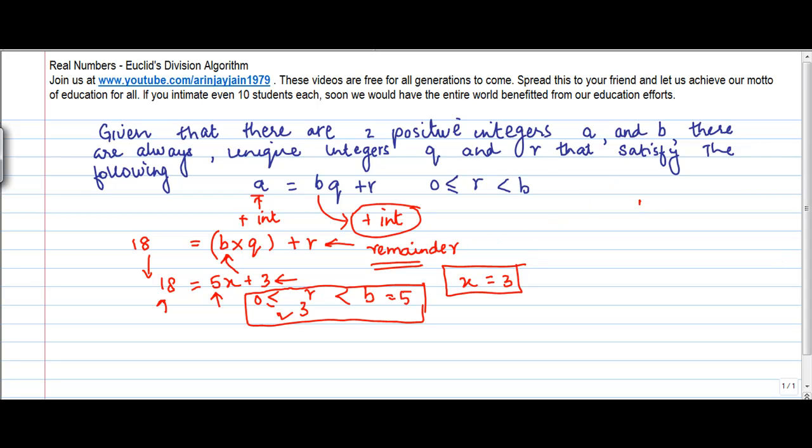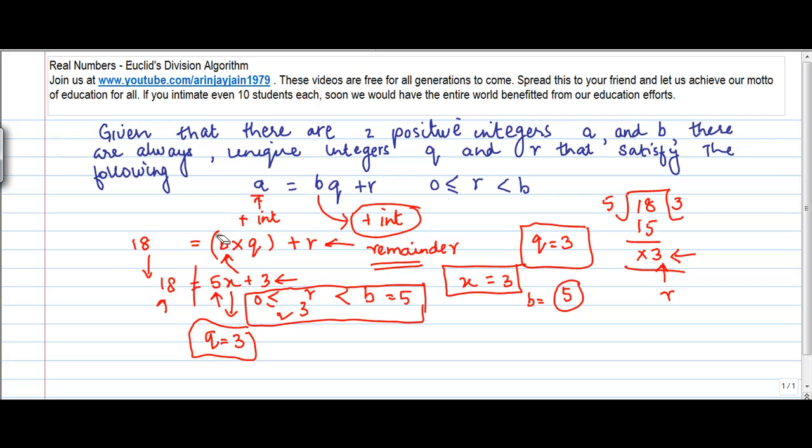Effectively, this is nothing great. If you were to divide 18 by 5, you would write 5 times 3 gives you 15, remainder 3. So r or the remainder is 3, b or the number which is multiplying is 5, and q in this example is 3. Given any two positive integers a and b, which is 18 and 5 in this case, there are always unique integers q and r. Unique means you can't put anything else here; this q has to equal 3. If you put anything else, this equation will not hold true.